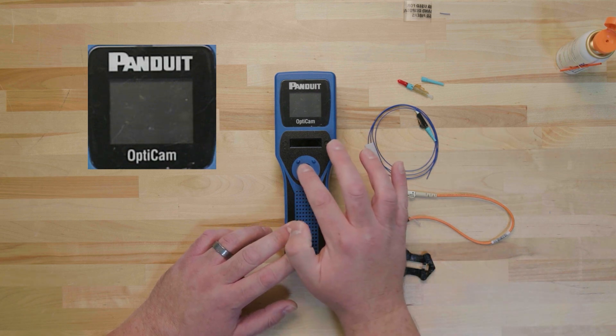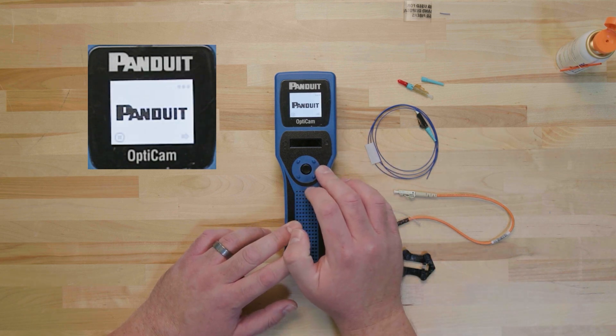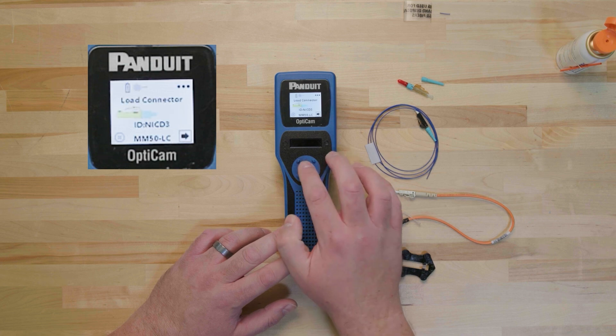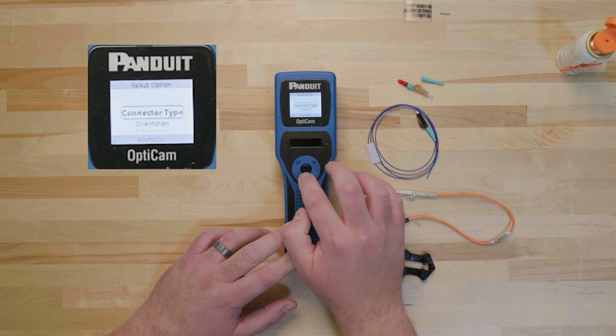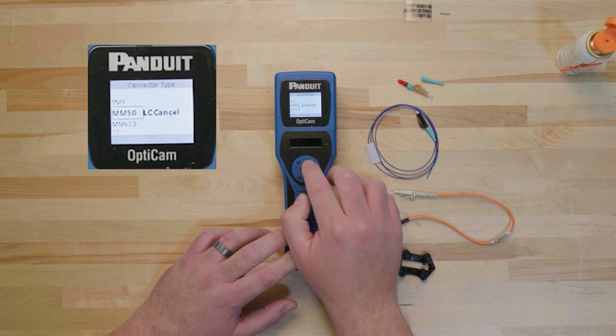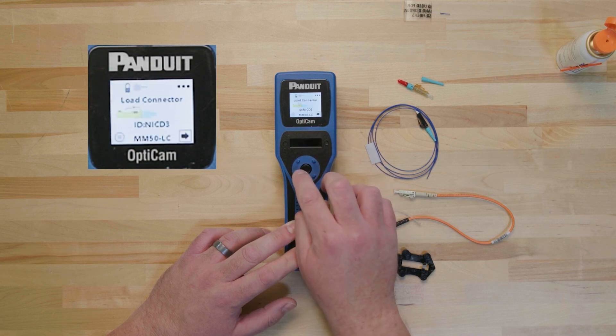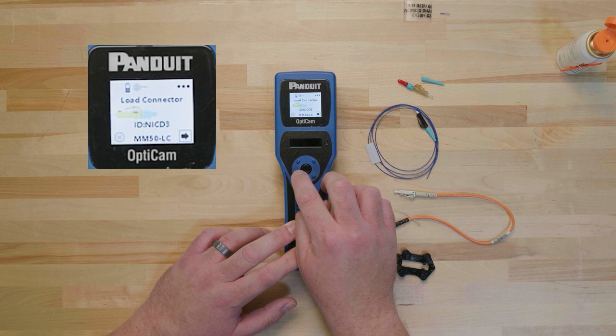Push the navigation button on the OptiCam II to turn on the screen. Enter the setup mode by clicking on the three dot ellipses in the top right corner of the screen. Select the correct settings for your desired termination. In this example, the multi-mode 50 and LC in the connector type settings and right in the orientation settings are selected to indicate a 50-micron multi-mode LC connector using a right-handed setup.